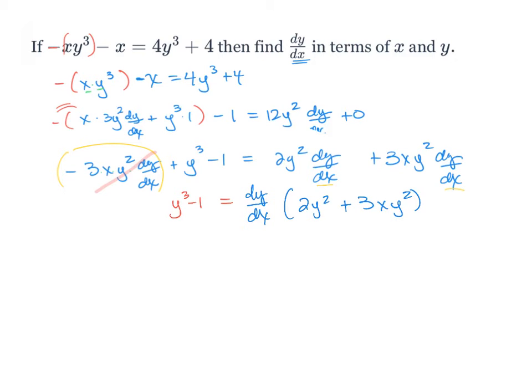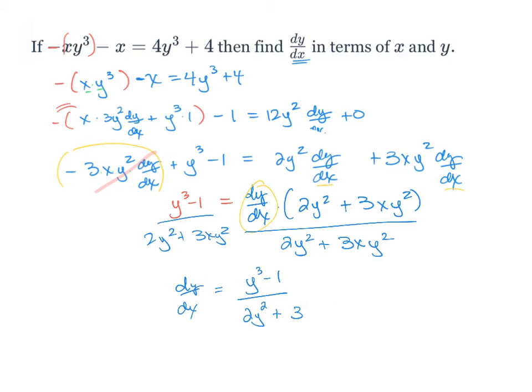I am so close. So what we want to do is, since it's multiplied, we're going to divide both sides by 12y² plus 3xy². And then dy/dx equals (y³ - 1)/(12y² + 3xy²). And that's it.